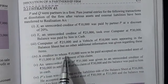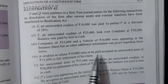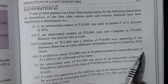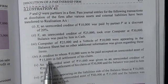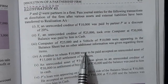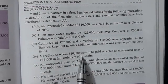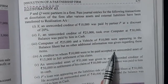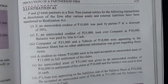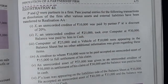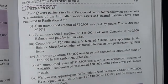Fourth transaction: a creditor to whom 10,000 were to be paid accepted an unrecorded asset of 15,000 in full settlement of his claim. Here a deal has been made — the creditor is taking an asset. When a creditor takes an asset, the entry involves Realization Account on both sides, so such an entry is recorded nowhere — no entry required.